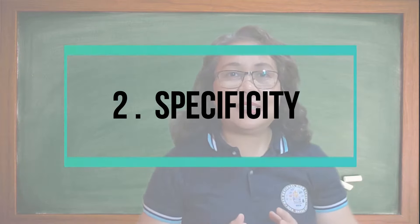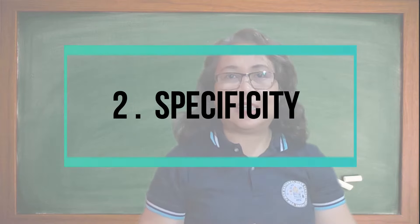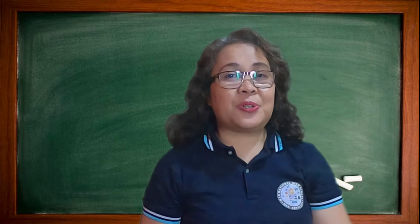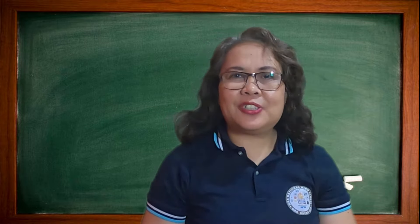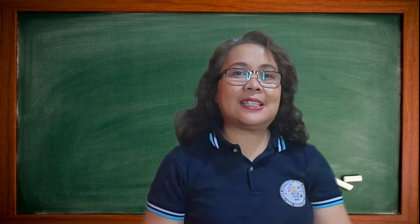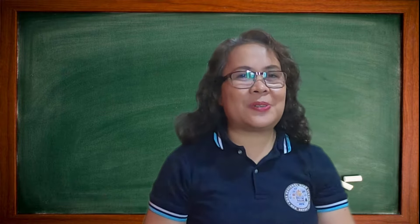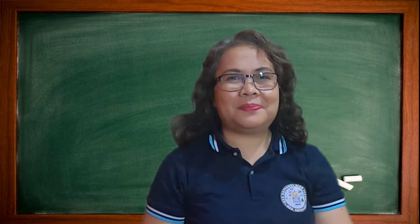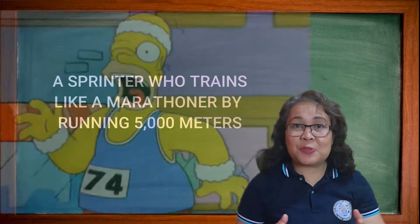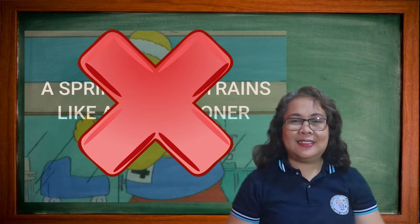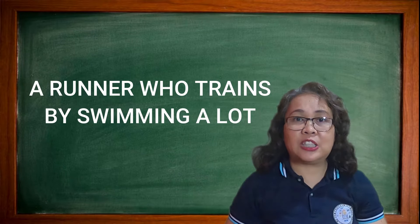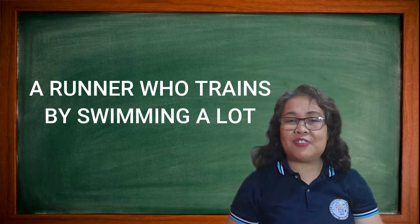The specificity principle relates to the type of training that you do. It should be specific to you and your sport. You should train the energy system which you use predominantly and the fitness and skill components most important to your sport. For example, don't run 5,000 meters in training if you're a sprinter. Another example: don't swim a lot in training and then expect your running to improve significantly.